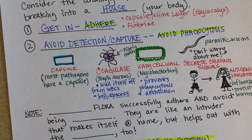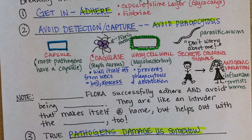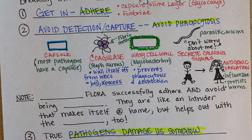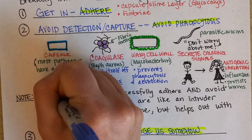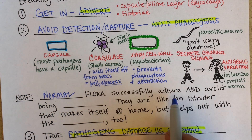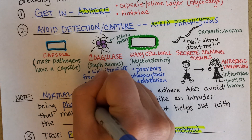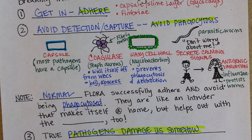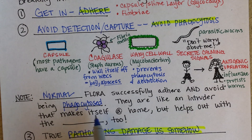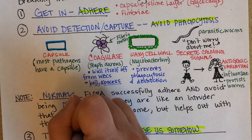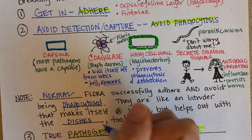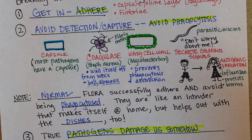Before moving on to causing damage — so far the bacteria haven't necessarily hurt you yet. Normal flora successfully adhere and avoid being phagocytosed; they accomplish steps one and two, or they wouldn't be part of your normal flora. They're like an intruder that makes itself at home but helps out with the dishes too. E. coli makes vitamin B and vitamin K for you; Lactobacillus helps crowd out candida and salmonella, and so on.